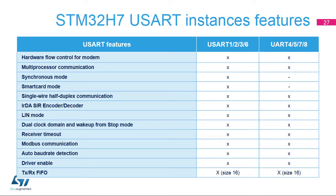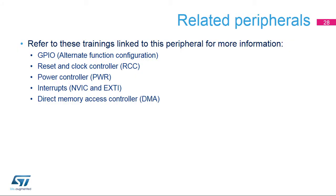The STM32H7 devices embed eight USART instances. USART 1, 2, 3, and 6 have a full set of features. Instances 4, 5, 7, and 8 do not support synchronous and smart card modes. This is a list of peripherals related to the USART — please refer to these trainings for more information if needed: General Purpose Input Outputs, Reset and Clock Controller, Power Controller, Interrupts Controller, and Direct Memory Access Controller.